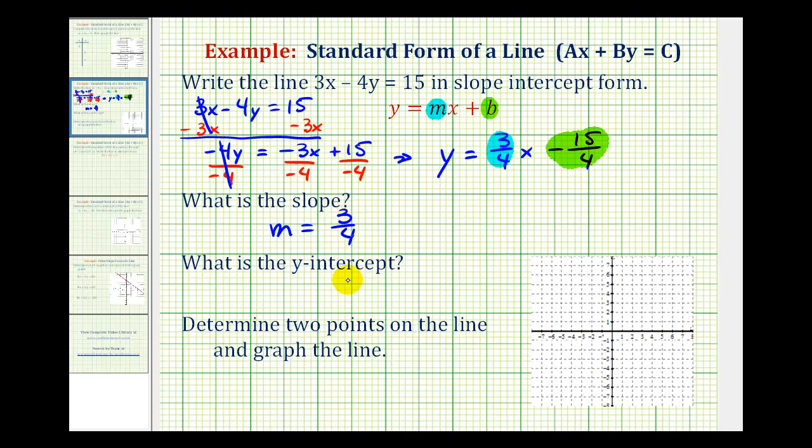And then for the y-intercept, since we have minus 15 fourths, that means our y-intercept would be negative 15 fourths. And we can write this two ways. We can write the y-intercept equals negative 15 fourths, or we can write the coordinates of the y-intercept, which would be 0, negative 15 fourths.